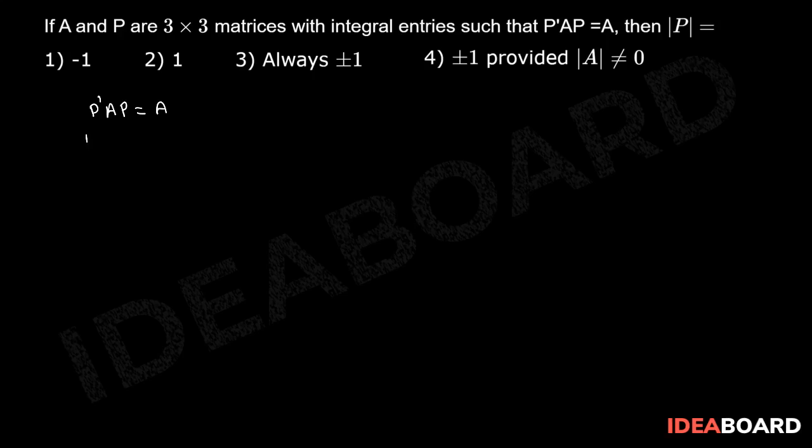Now, by taking determinant on both sides, we have |P' AP| equals |A|. This implies |P'| × |A| × |P| equals |A|, since we know that determinant of AB equals determinant A times determinant B.